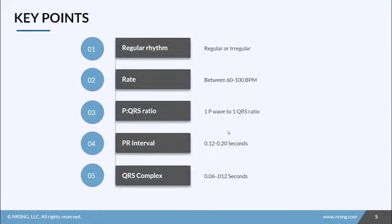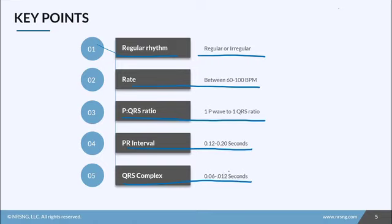So the biggest takeaway from this lesson is to remember the steps to identify a rhythm. First thing, is it regular or irregular? Is the heart rate normal? Is it too fast? Is it too slow? Do we have one P wave followed by one QRS? Is our PR interval between 0.12 to 0.20 seconds? Is the QRS complex between 0.06 and 0.12 seconds? If all of these things are normal on an EKG, then we have a normal sinus rhythm.